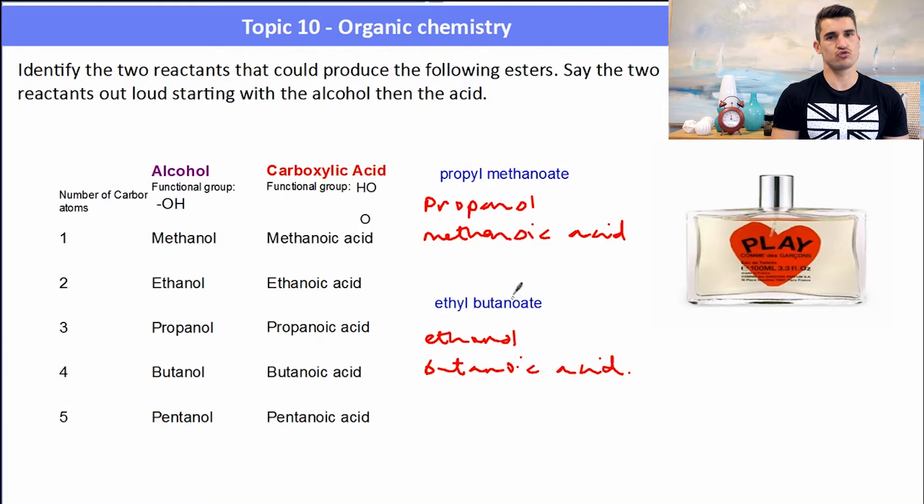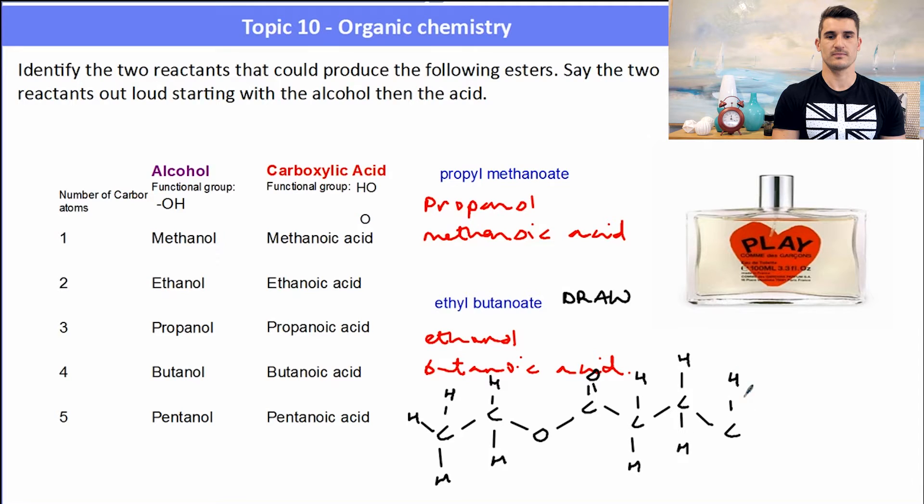Then we might be asked to draw this particular ester. So how would we draw that? Well, we start off with the alcohol. Ethanol has two carbons with a single bond to the oxygen, and then the butanoic acid would have four carbons with the carboxy group at the first carbon. So that's our C double bond O. You can see our ester functional group in the middle there—the O bonded to a carbon with a double bond to the oxygen. You can see that if we split the functional group in half, we can see the alcohol to the left and the acid to the right. Our ethanol on the left and our butanoic acid on the right. Remember water would be produced in this reaction as well.